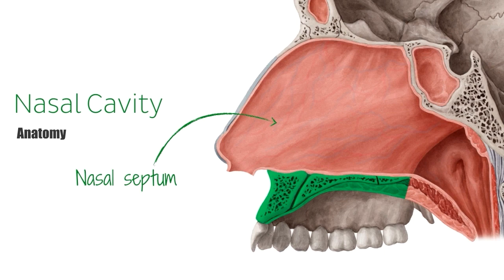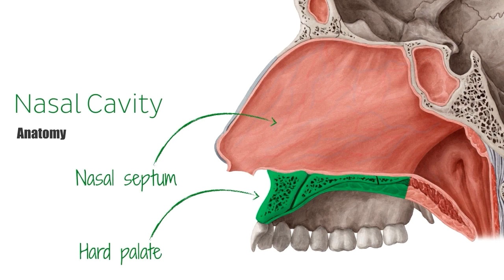These two bones also descend and arise from the cribriform plate, the maxilla and the palatine bone. The nose, as we can see in the image, is separated from the mouth by the hard palate, which is also formed by parts of the maxilla and palatine bone and is highlighted in green.